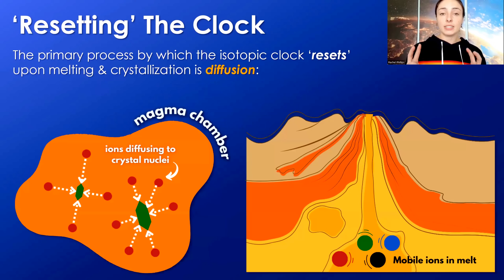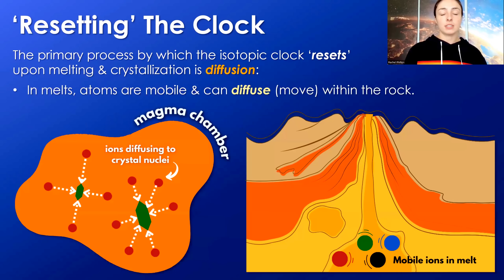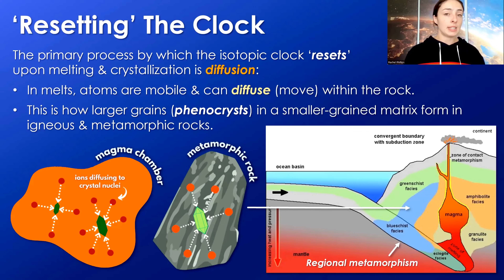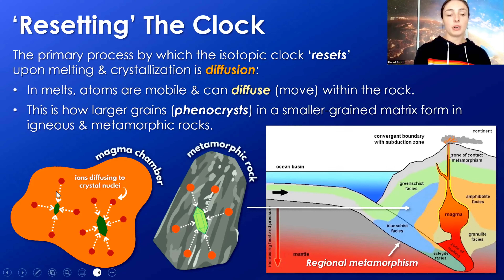The primary process that resets isotopic clocks upon melting and crystallization is diffusion. In melts — melted rocks beneath our surface — atoms are mobile and they can diffuse or move through the rock. This is often how larger grains, called phenocrysts in smaller-grained matrices, form in igneous and metamorphic rocks. In igneous rocks, for example, within the magma chamber, the atoms diffuse to a nucleation site where a crystal is growing. If the melt remains melted for a long time, these atoms or ions have a long time to diffuse to that nucleation site.